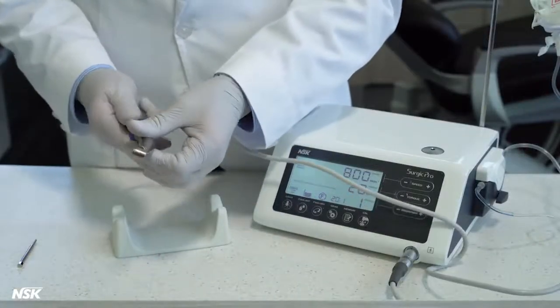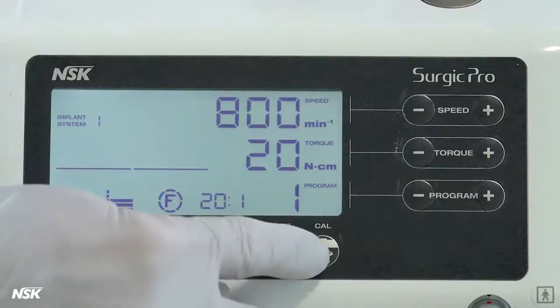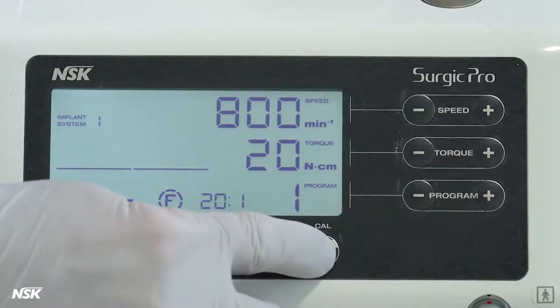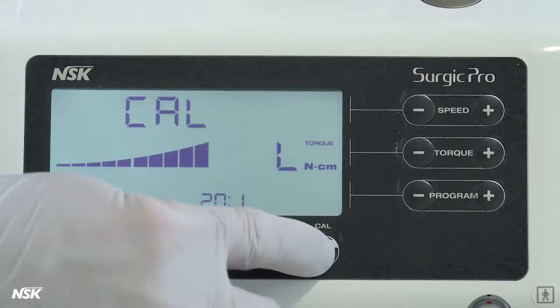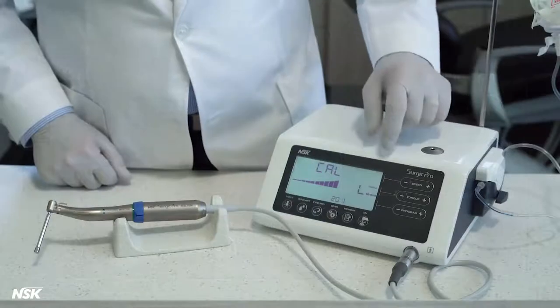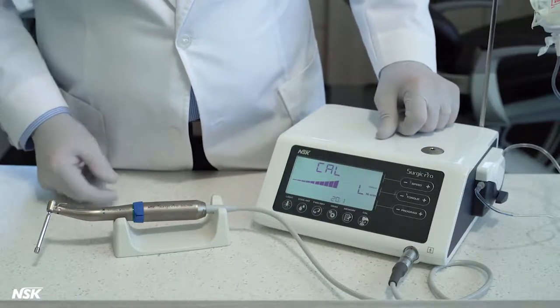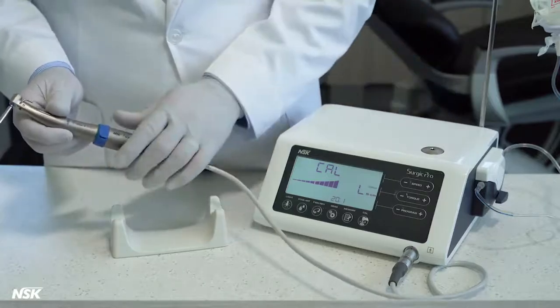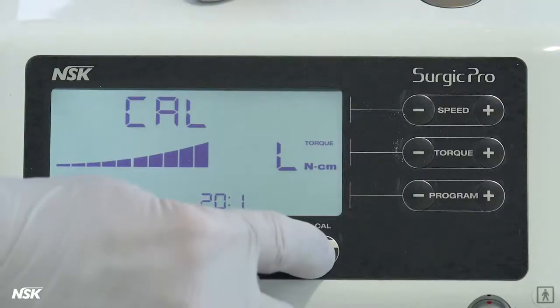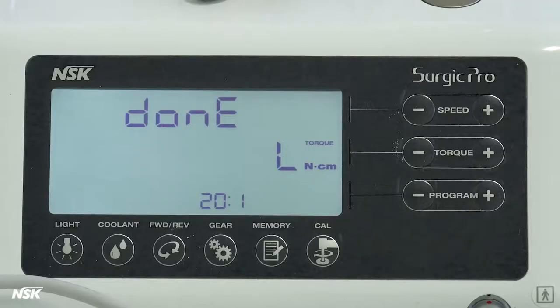Attach the 20 to 1 attachment to the motor and insert the calibration drill. Press the cal key for two seconds. After you hear a long beep, the display will turn to calibration mode. You're ready to calibrate. Step one is no load calibration. Torque displays L. Hold the motor in one hand and press cal key. The drill will begin to rotate. Once this part is completed, you will hear a beep and see done on the display.